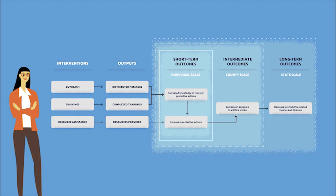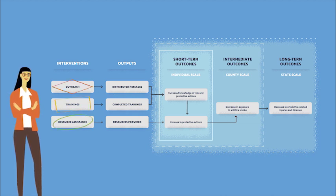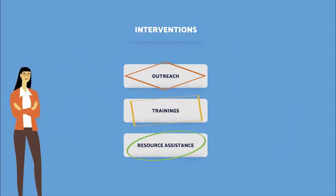The short-term outcomes column is encircled with a solid white line; this column plus intermediate outcomes is encircled in a dashed white line; and all three outcome columns are encircled in a dotted white line. Because her program includes three major interventions—outreach, training, and resource assistance—Elaine updates her larger model using a red diamond for outreach, a yellow rectangle for training, and a green circle for resource assistance, then breaks it into three intervention-specific logic models.